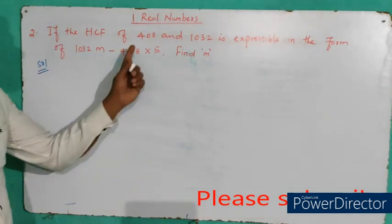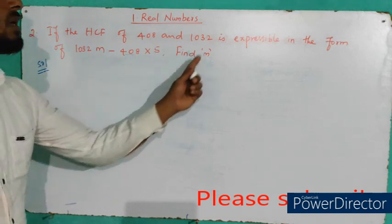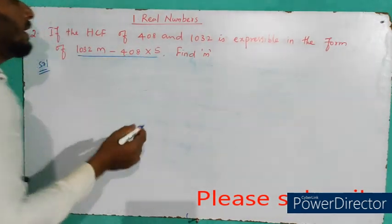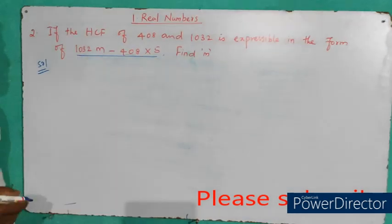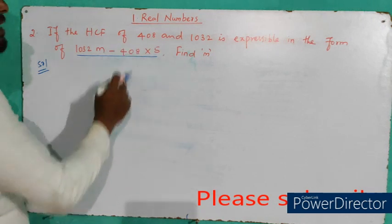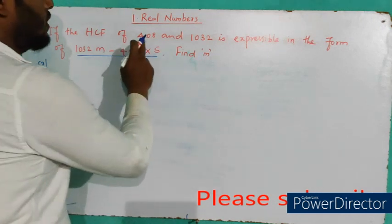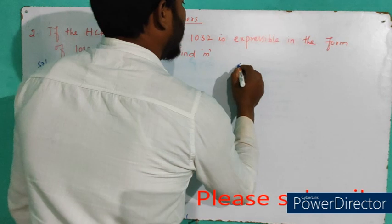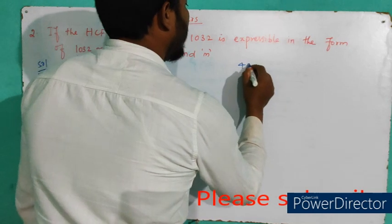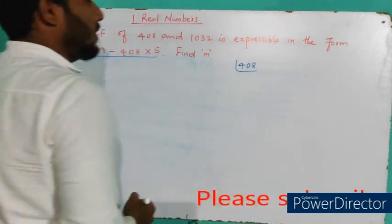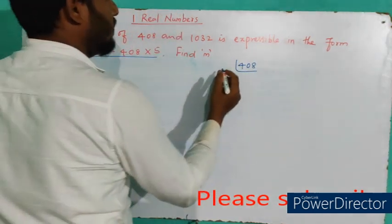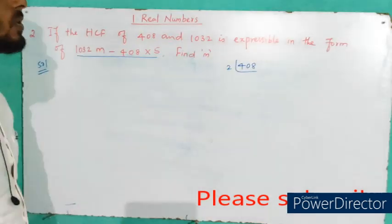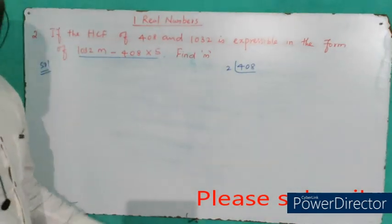The HCF of the two numbers is given in a specific format. Let us first find the HCF using the prime factorization method for these two numbers. Let's take 408 and find out its prime factors, starting with 2, the smallest prime number.